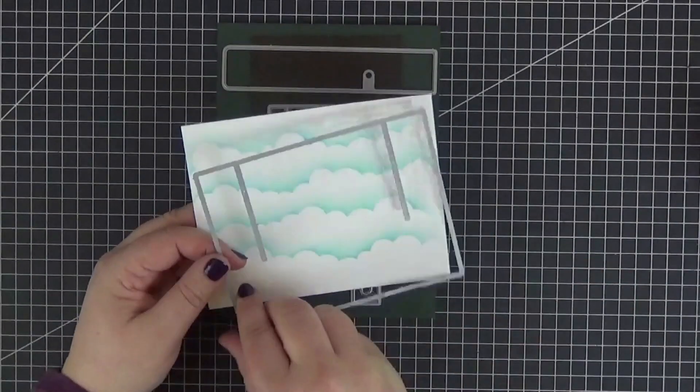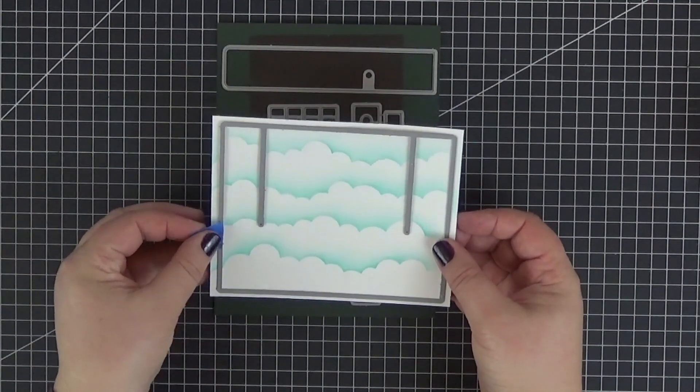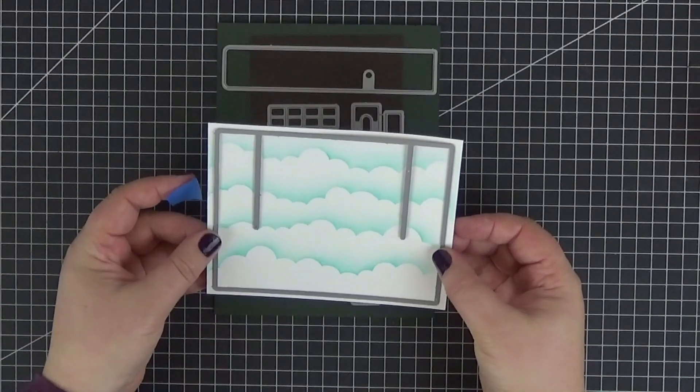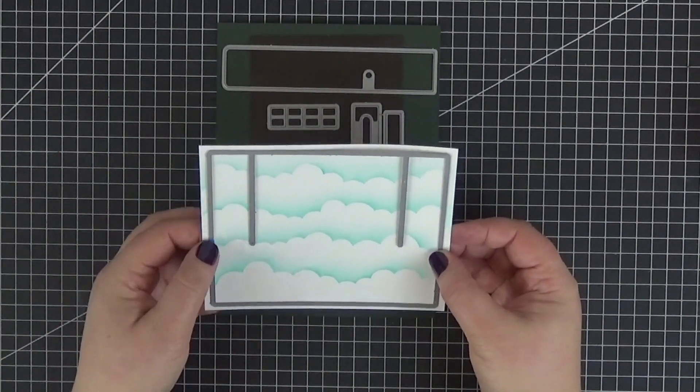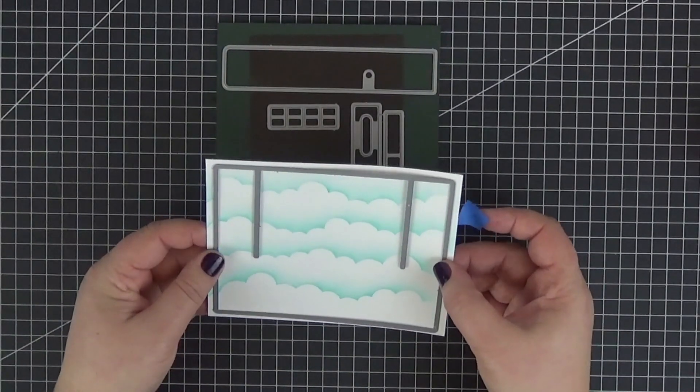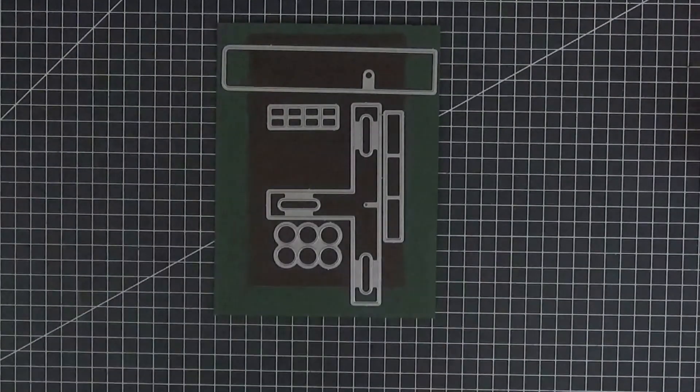When we're done we can grab the large rectangular die from the interactive up and down dynamic set to cut our panel. The vertical grooves need to be on the upper edge of the panel so be sure to adhere the die correctly to the cloud background before running it through your die cutting machine.